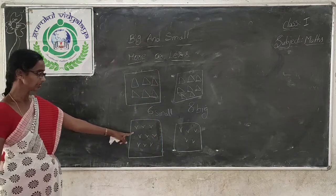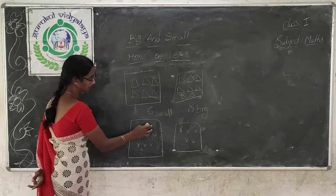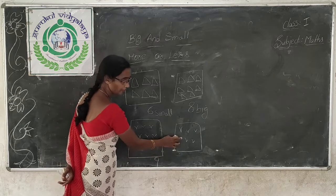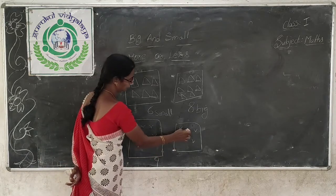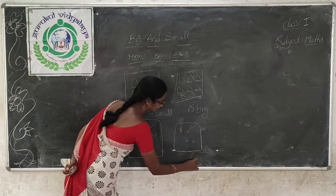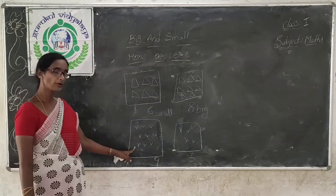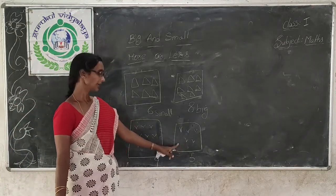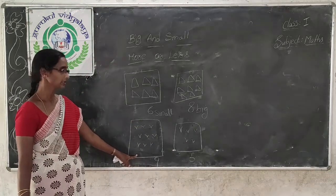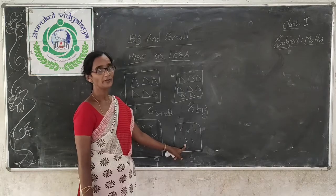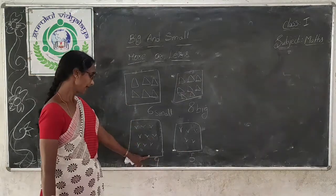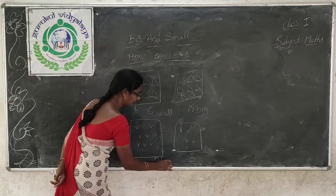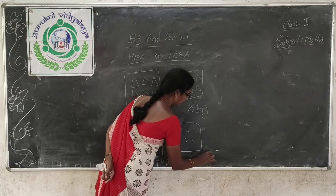See how many triangles are there in this group? 1, 2, 3, 4, 5, 6, 7, 8, 9. And how many birds are there in this group? 1, 2, 3, 4, 5. So which group has more birds? This group has more birds and this group has less birds. That means this group has big number of birds and this group has less number of birds. So 9 is the big number and 5 is the small number.